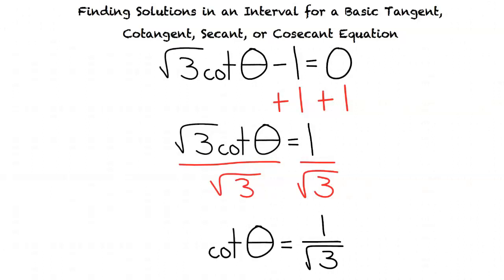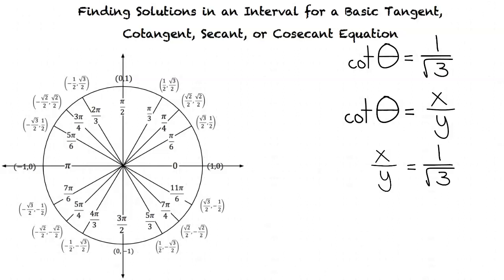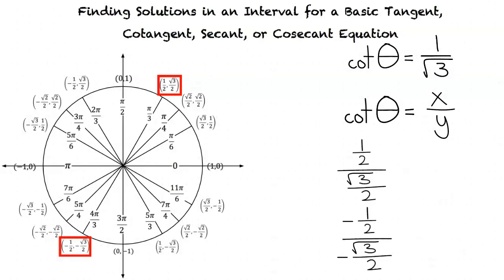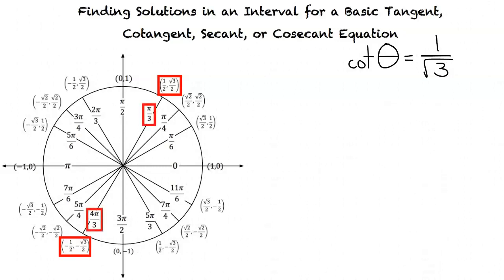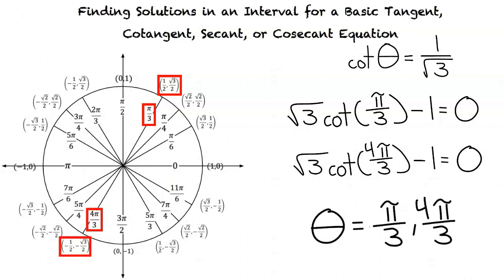Now that we have isolated cotangent theta, we go back to the unit circle to identify which points result in 1 over square root of 3. Cotangent theta equals x over y, so we need x and y values that, when divided, give 1 over square root of 3. The values 1/2 comma square root of 3 over 2 and negative 1/2 comma negative square root of 3 over 2 produce x over y equal to 1 over square root of 3. The corresponding radian values are π/3 and 4π/3. Thus, our final answer is theta equals π/3 and 4π/3.